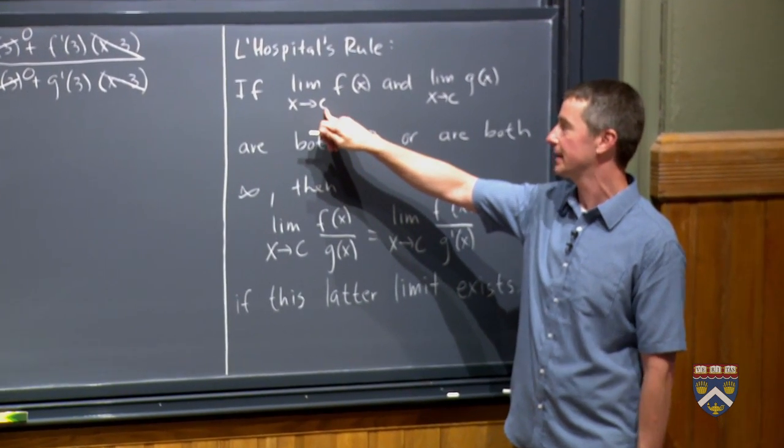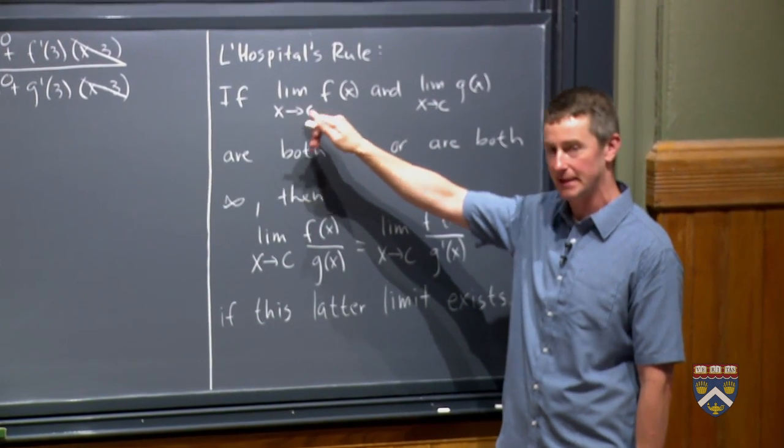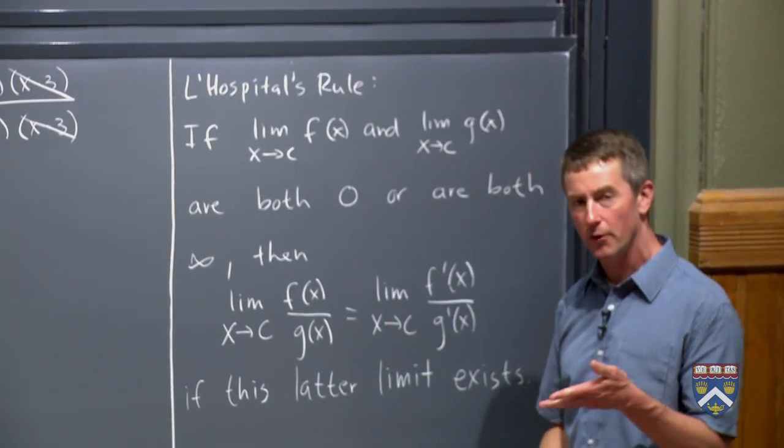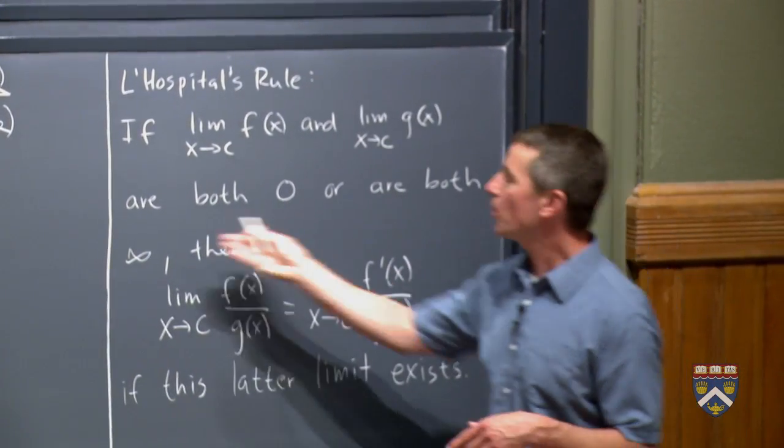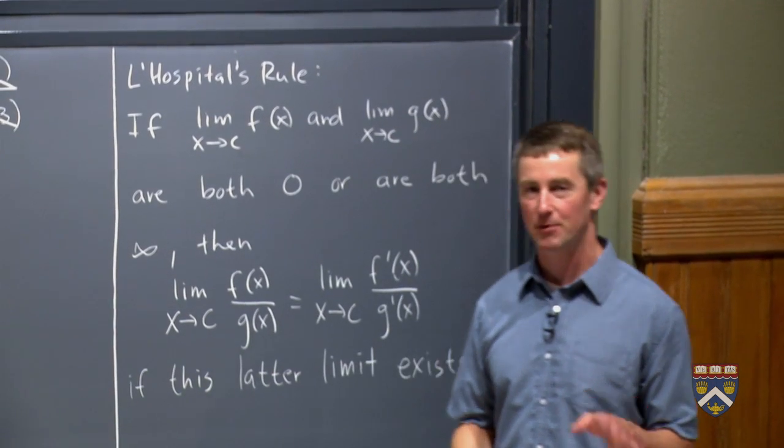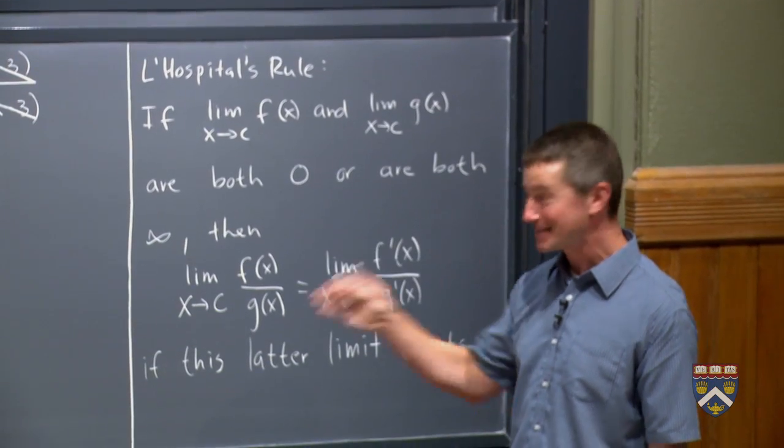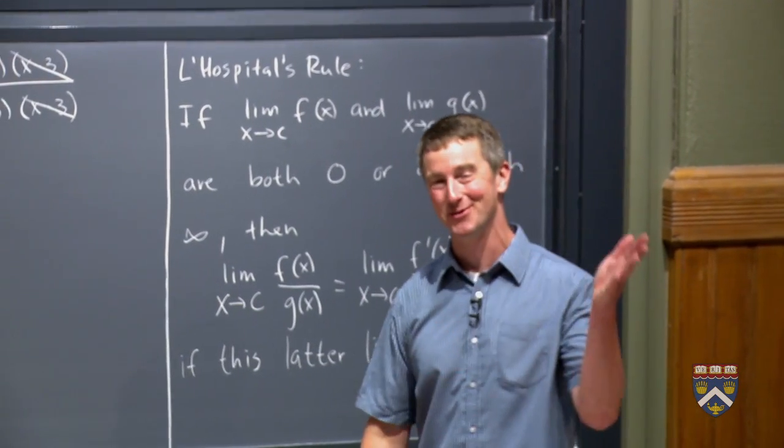It says if the limit as x goes to any number c, or this c could even be infinity, we could say x is going to infinity, of f(x) and g(x), if they're both going to 0 or they're both going to infinity. Now we have an applet for you to explore the infinity over infinity case after this video, but it's hard for me to draw that on the board, of course, when we're going to infinity.